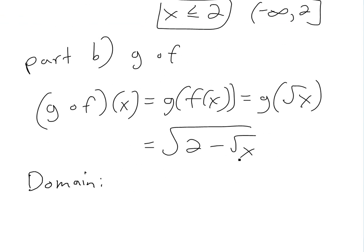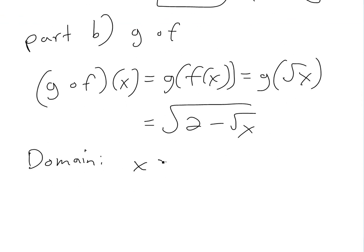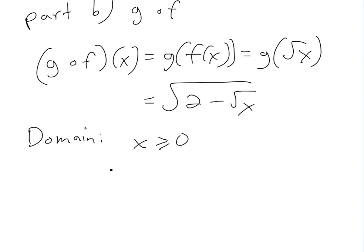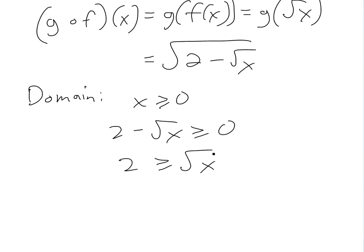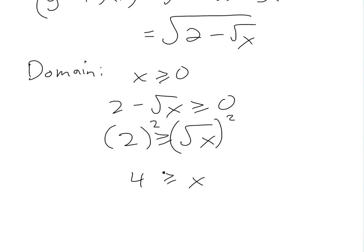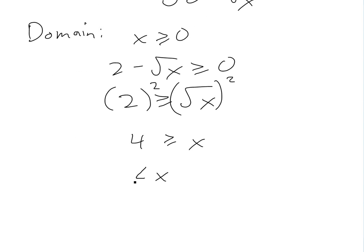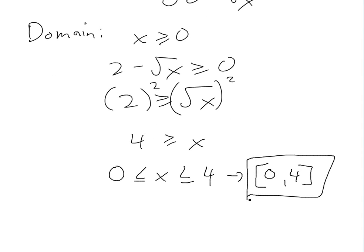Now we find the domain. For the inner square root of x, we need x greater than or equal to 0. Also, the inside of the outer square root must be greater than or equal to 0: 2 minus square root of x is greater than or equal to 0. Rearranging gives 2 greater than or equal to square root of x. Squaring both sides gives 4 greater than or equal to x. So the domain is 0 less than or equal to x less than or equal to 4, or in interval notation, the closed interval [0, 4].